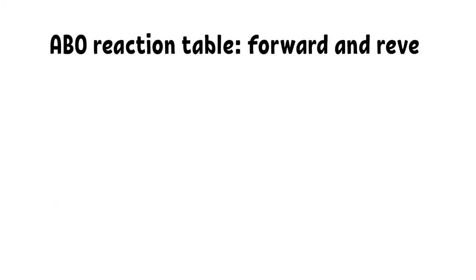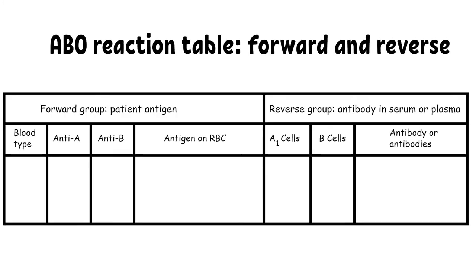An individual with group B blood type, this person will have B antigen on the red blood cells and we can expect to find anti-A in this person's serum.